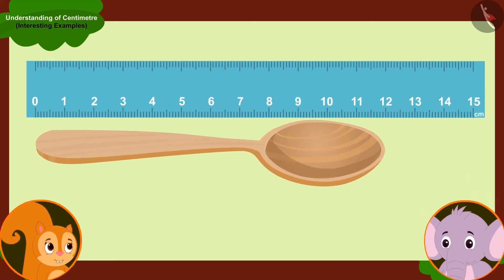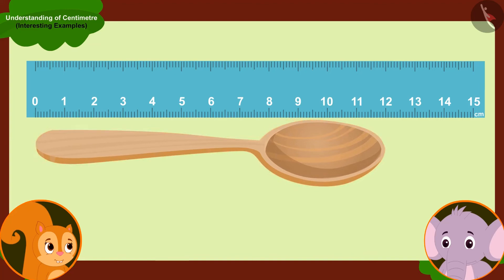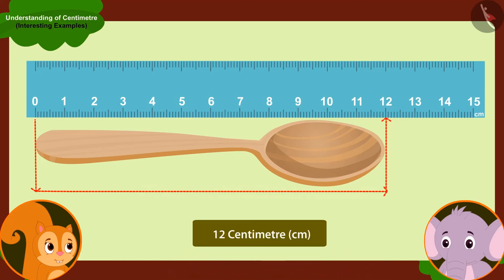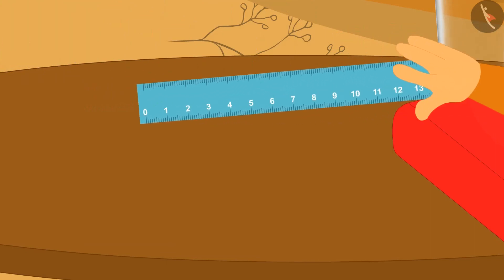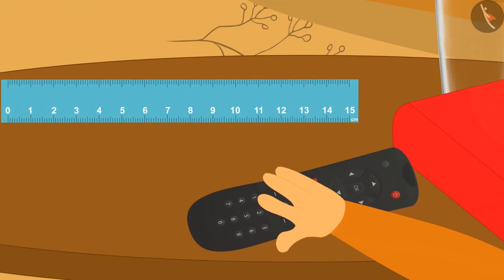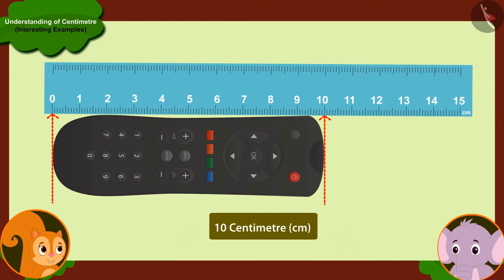Chanda could not understand how Appu found this out. Appu said to her: whenever you have to measure the length of any object, you place it next to the ruler and start measuring from zero. The number which is reaching the other end of your object — the length of your object will be that centimeter. Chanda got really excited about the ruler and immediately placed her TV remote next to it. She told Appu, look — my TV remote is 10 centimeters long. I learnt to measure the length of objects from the ruler.